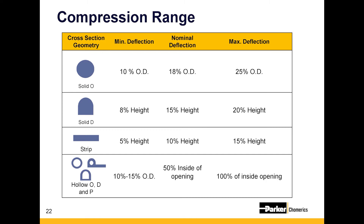The deflection ranges don't change based on the size of the gasket. For example, whether you have a solid-O profile that's 70 thousandths or a solid-O profile that's a quarter of an inch, you're still looking for that same compression percentage range.